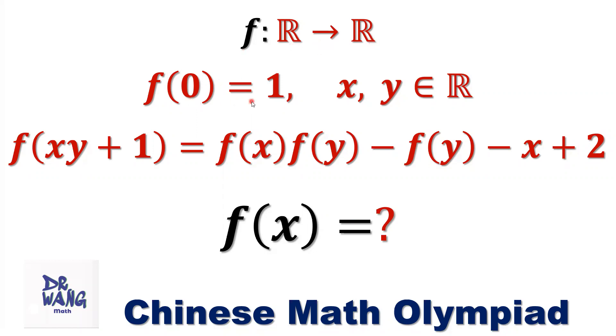f(0) equals 1. For any x, y, if they are real numbers, we have f(xy + 1) equals f(x) times f(y) minus f(y) minus x plus 2. What is the function f(x)?